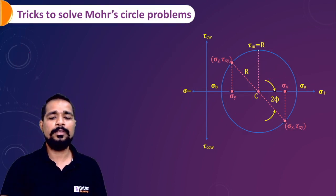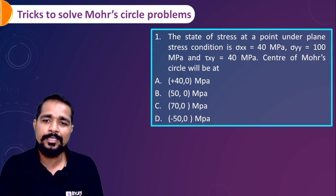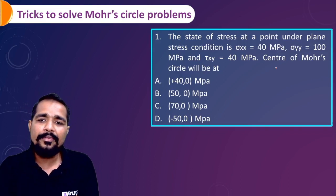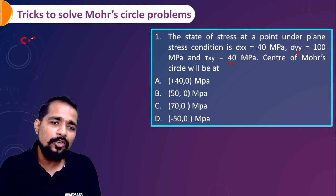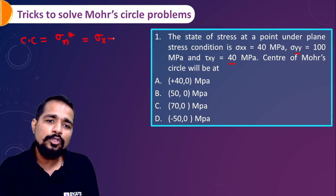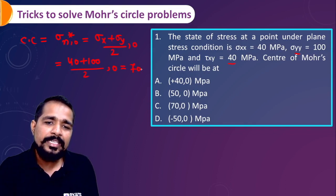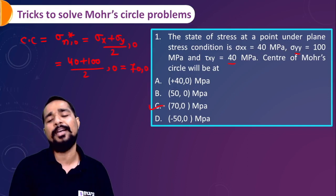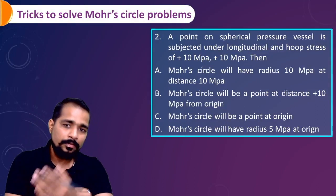Problem 1: A state of plane stress at a point has σ_x = 40, σ_y = 100, τ_xy = 40. Find the center coordinate. The center coordinate is σ_n* = (σ_x + σ_y)/2 = (40 + 100)/2 = 70, so the center is at (70, 0).